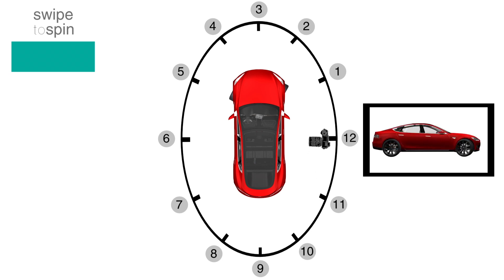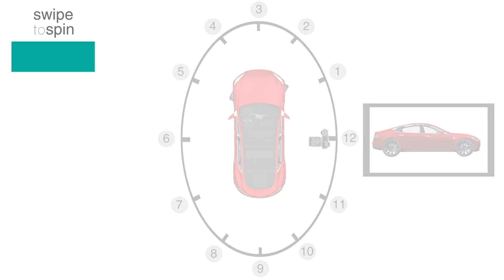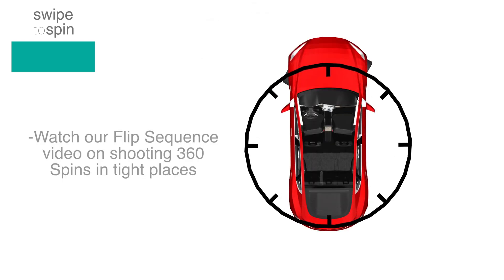If you do not have enough room to walk all the way around the car in a circle, you should watch our flip sequence video on shooting 360 spins in tight places. This video will show you how to create a 360 spin and turn the car around midway through the photo process.